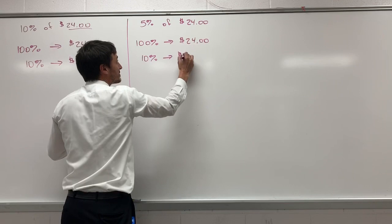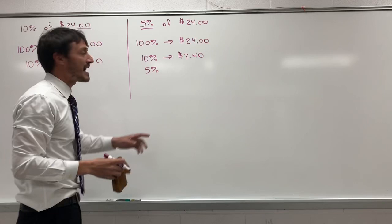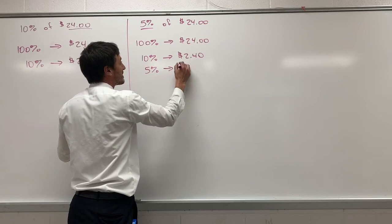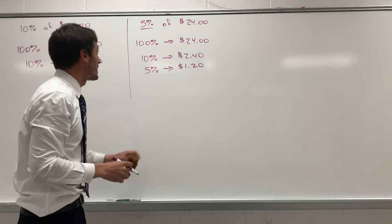But if we notice, 5% would be exactly half of 10%. So if we know that 10% is $2.40, then to find 5% would be to cut the 10% amount in half. So 5% would be the same as dividing 240 by 2, which gives us $1.20. So 5% of $24 is $1.20.